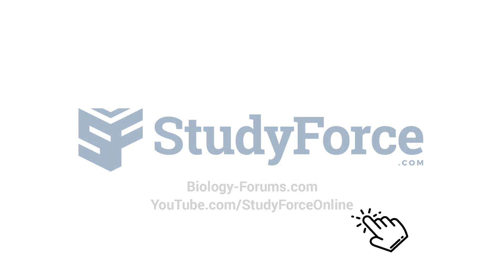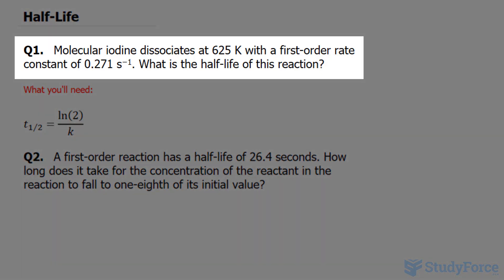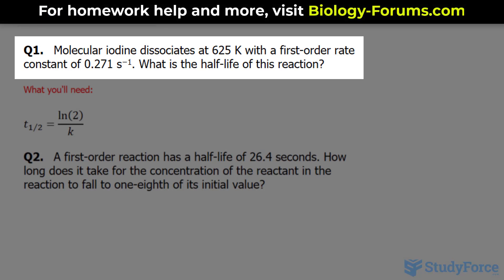In this lesson, we'll solve two half-life related problems involving reaction rates. The first question reads: molecular iodine dissociates at 625 Kelvin with a first order rate constant of 0.271 s to the power of negative 1. What is the half-life of this reaction?